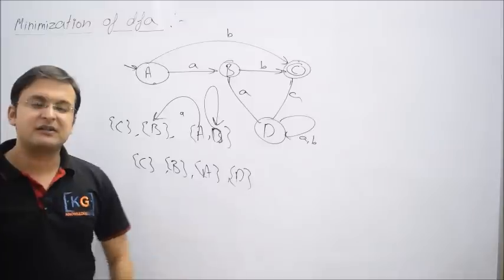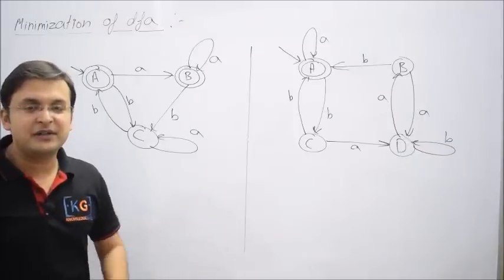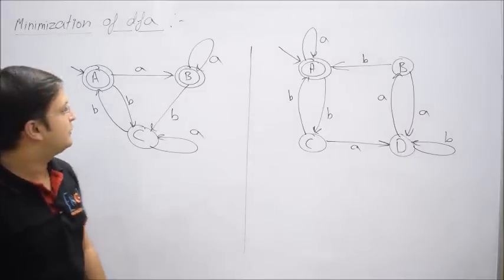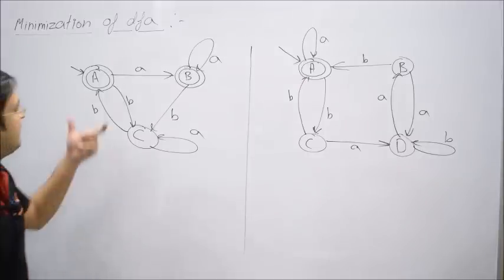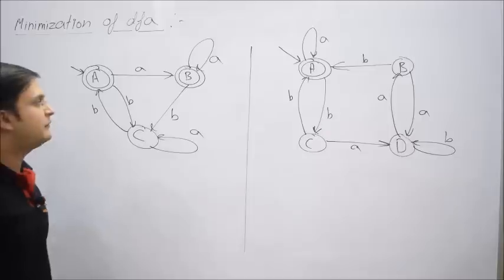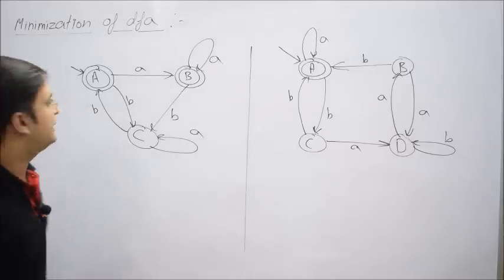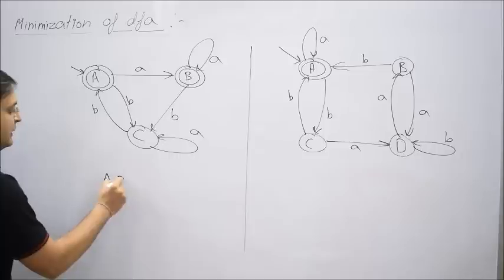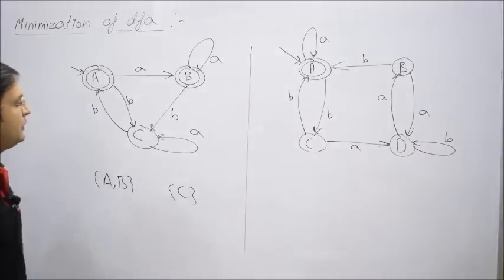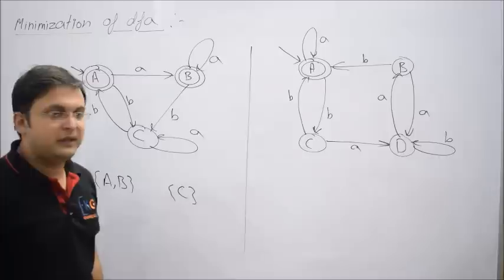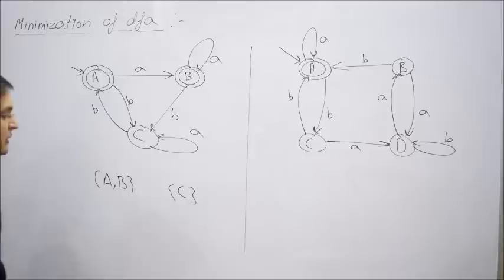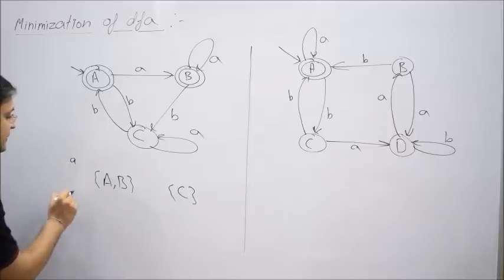Let's try one more question which will give a better understanding about equal states. Now we have a DFA which has two final states and one non-final state, and the question is to minimize it. Step one: make two groups — one of final states and one of non-final states. There are two final states A and B in the group of final states, and non-final state C. The non-final group has only one state so there's no scope of minimization there, but A and B could be equal — let's check.